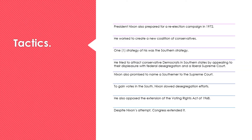President Nixon was preparing for the 1972 election campaign and wanted to create a new coalition of conservatives. One strategy was called the Southern Strategy — he tried to attract conservative Democrats in Southern states by appealing to their displeasure with federal desegregation and a liberal Supreme Court. He promised to name a Southerner to the Supreme Court. Nixon began to slow down desegregation efforts in schools and public facilities. He also opposed the extension of the Voting Rights Act of 1968, but despite his attempt, it was extended by Congress.